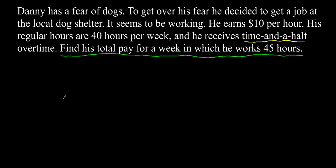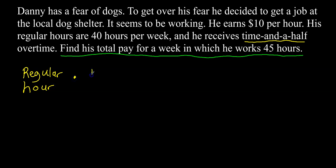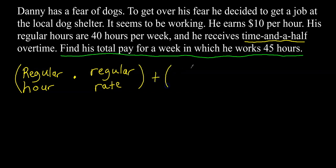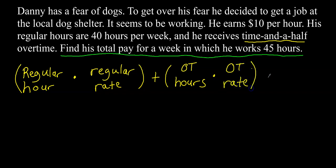Here's a formula to find the total pay: regular hours times regular rate, plus overtime hours times the OT rate, and that gives you your total or gross pay. Sometimes it'll say gross pay — same thing. So: regular hours times regular rate, plus OT hours times OT rate, equals total pay.